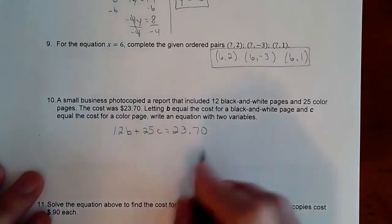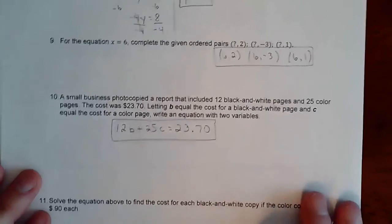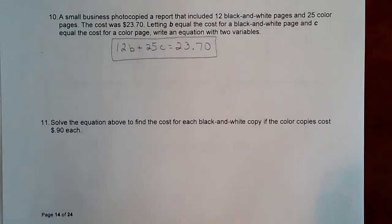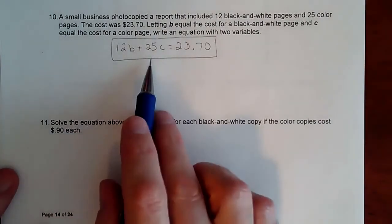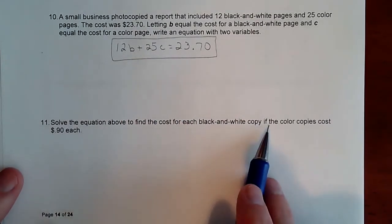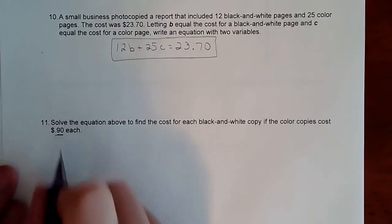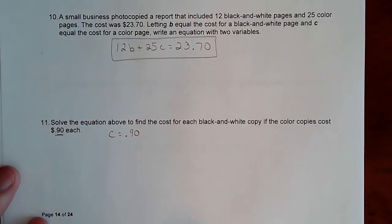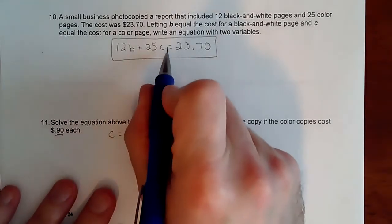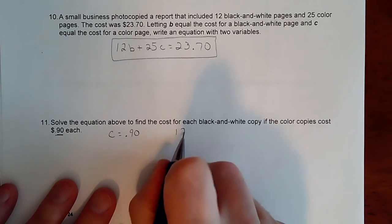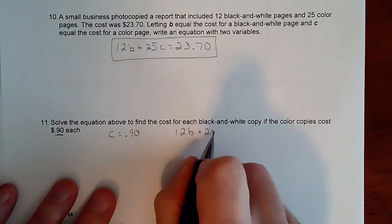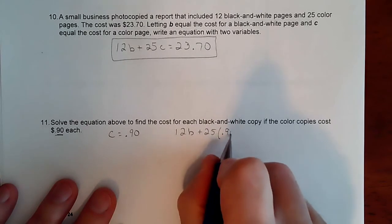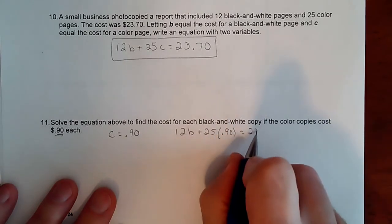Okay. And so if we knew more information, then we would go further with it. But all this was, was just practicing setting up an equation because in a word problem, that's one of the hardest parts anyway. Okay. So, oh, here we go. Solve the equation above. So here's our equation to find the cost for each black and white copy if the color copies cost 90 cents each. So that tells me that the color is 90 cents. Perfect. So now we can go further with it. So I have a value that I can replace here.